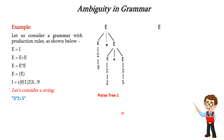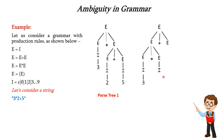Now let us check for another parse tree. e can be written as e plus e using rule number 2. Then this left e can be written as e star e using rule number 3. This e is written as i, then 3; and the next e as i, then 2. The right e of e plus e is written as i, then 5. Scanning left to right gives 3 into 2 plus 5 — so we get another parse tree.